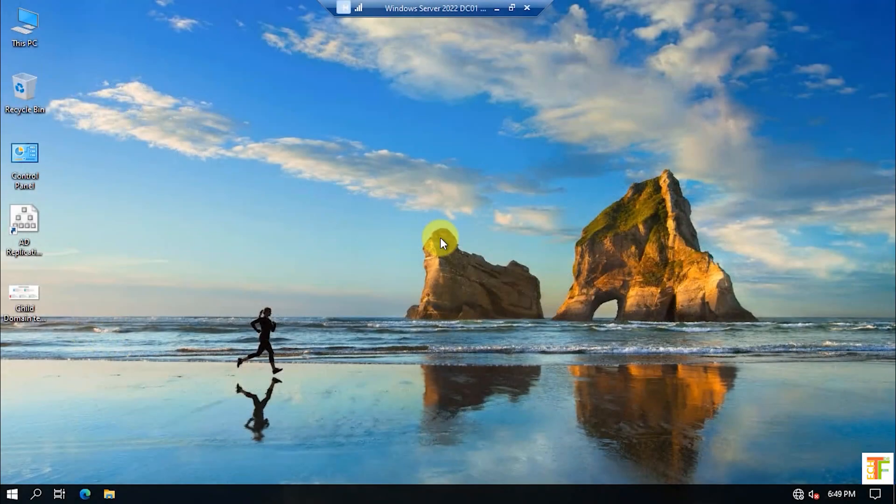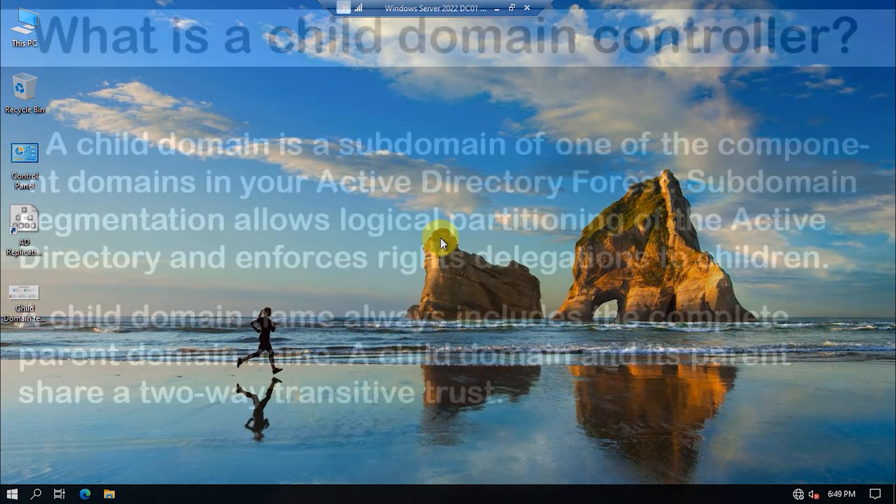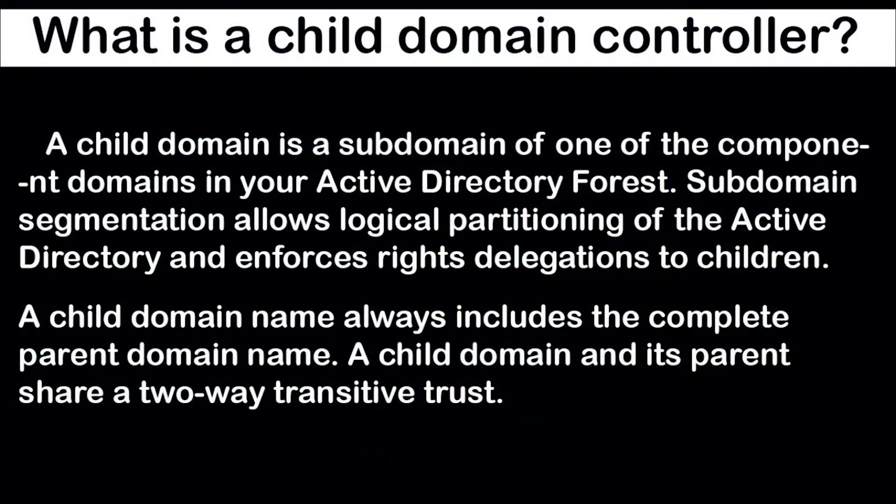In this tutorial I will show you how you can install a child domain in an existing forest. A child domain is a subdomain of one of the component domains in your Active Directory forest. Subdomain segmentation allows logical partitioning of Active Directory and enforces rights delegations to the children. A child domain name always includes the complete parent domain name, and it shares a two-way transitive trust with its parent.